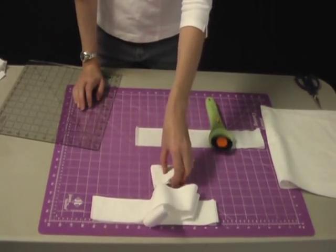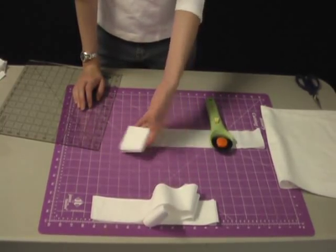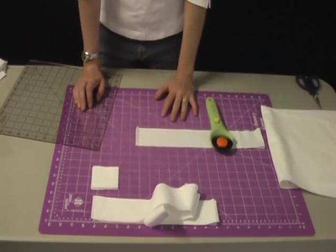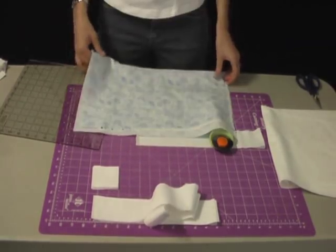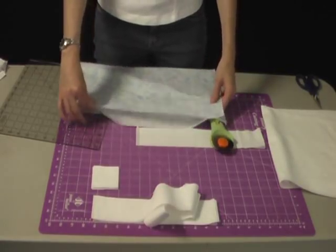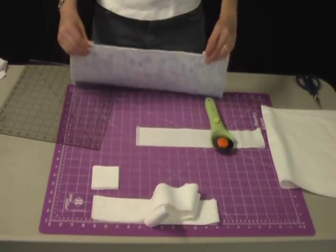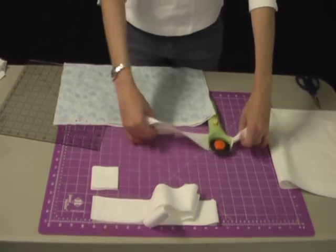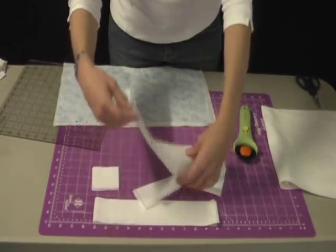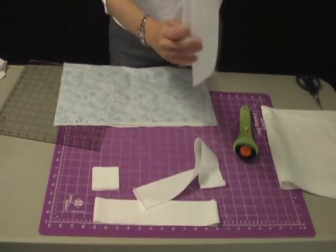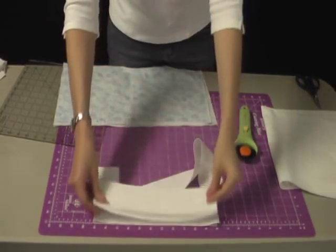So there we go. We've cut several squares in white. Now let's cut several squares in blue. Here's our blue fat quarter. Fat quarters are much easier to cut because they're smaller. They're only, you're only working with half of the yard, half of the width. So only about 20 to 22 inches wide. That's a lot easier.